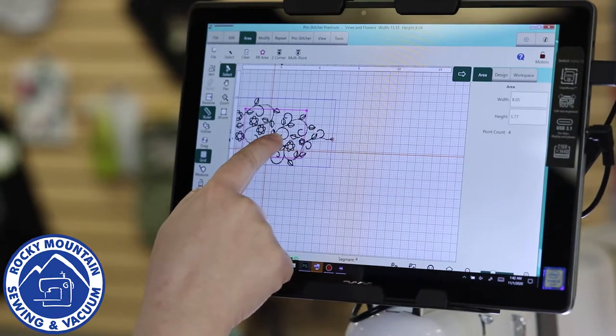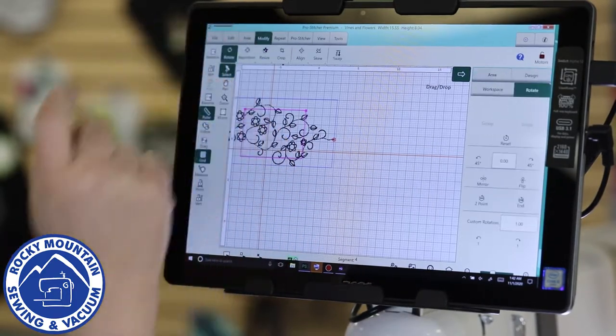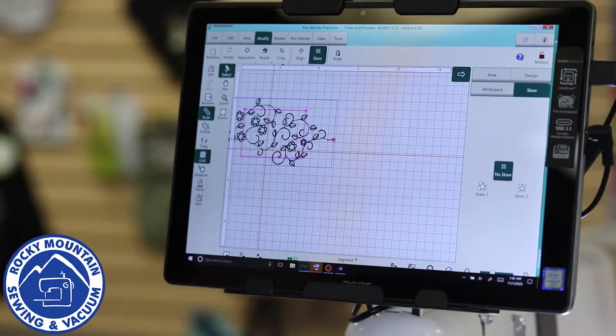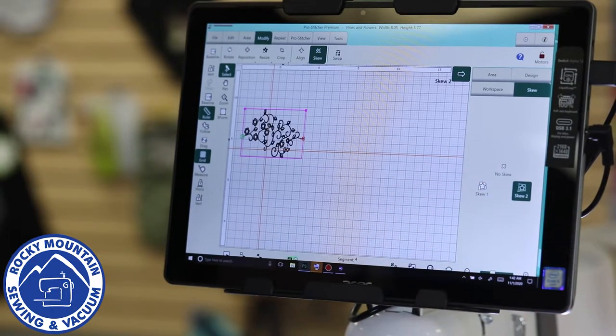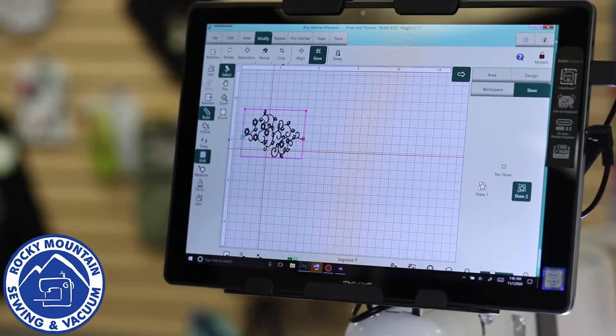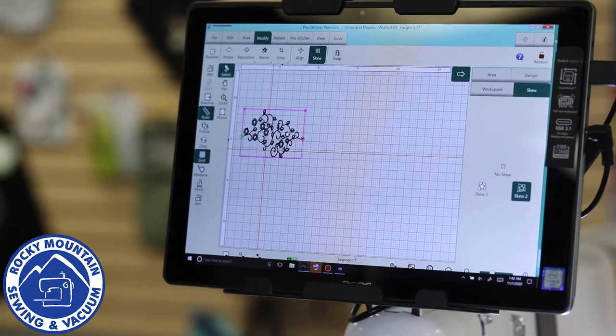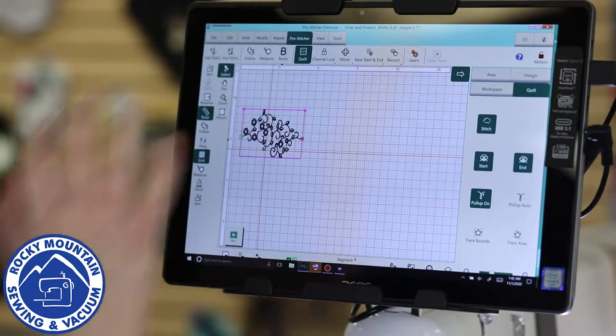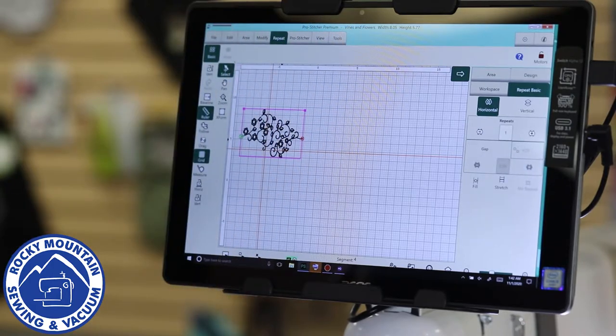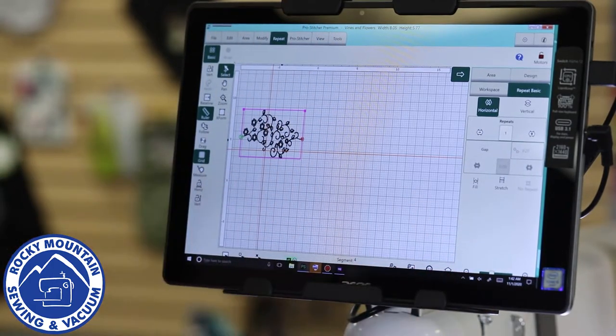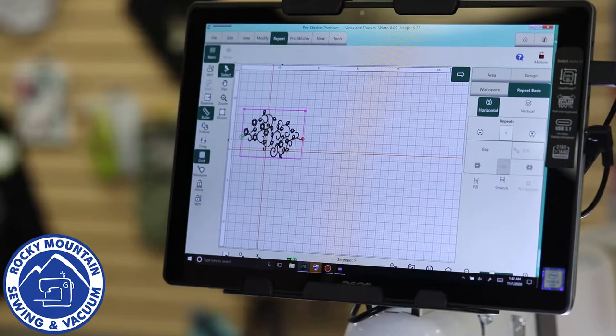So I can drag my design into the area I want it in, go to modify, I like to play with skew, and skew it into the box so it fits it nice and neat. When I'm ready from there if I wanted to do endless quilting and stuff I can repeat and go crazy with it, all sorts of stuff. For now, I'm just going to do the one though.